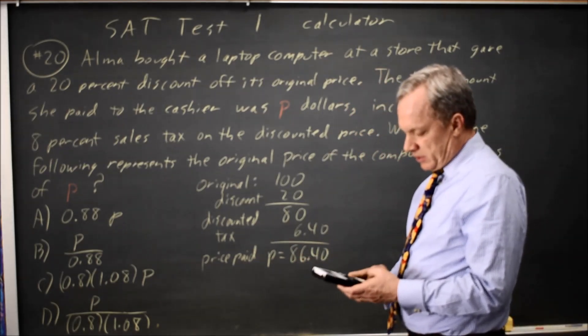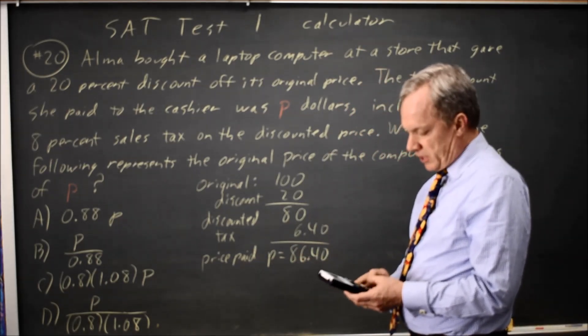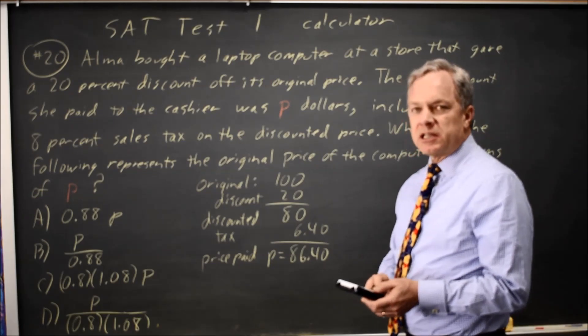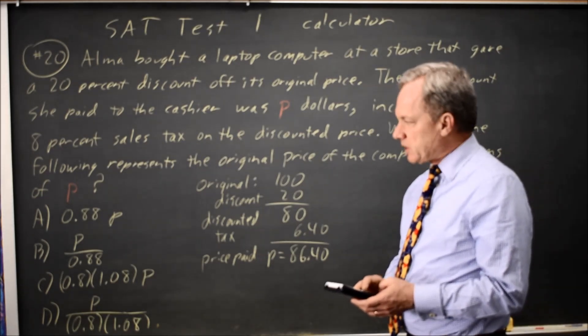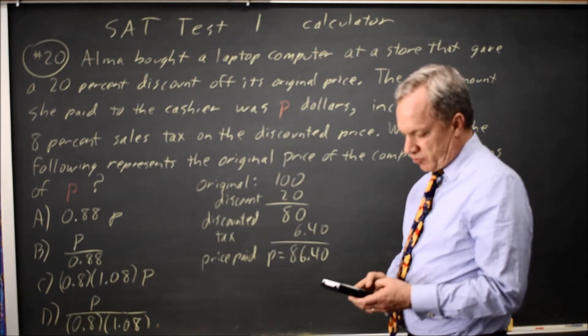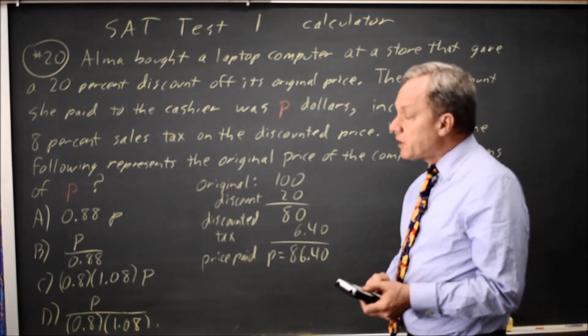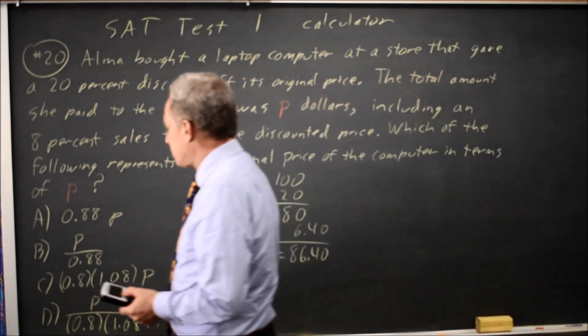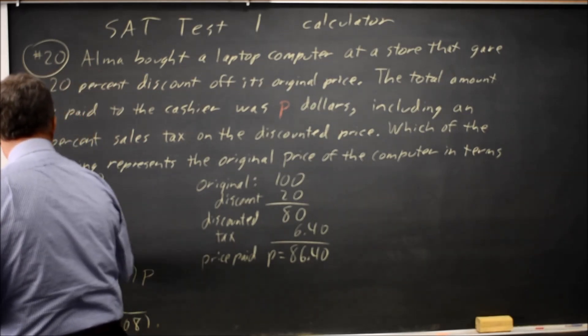If I try 86.40 times .88, that's choice A, and that's $76, which is not right. How about 86.40 over .88? That's $98. That's much closer, but it's still not right. So A and B are wrong.